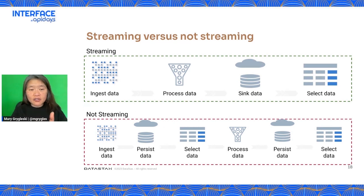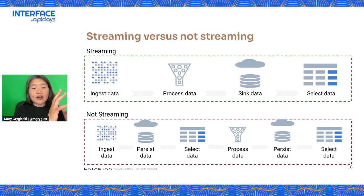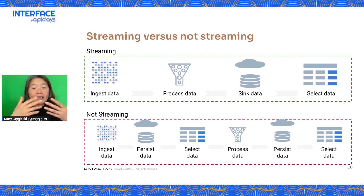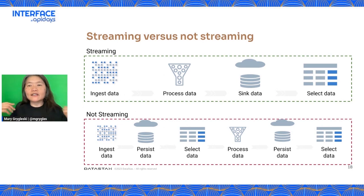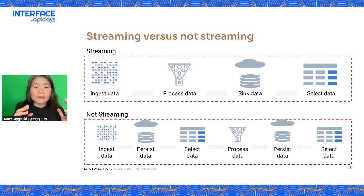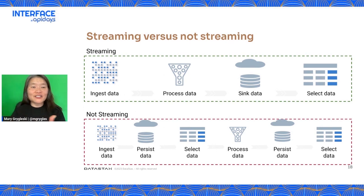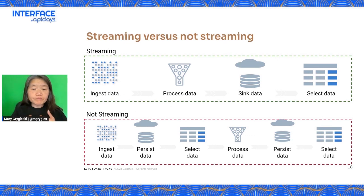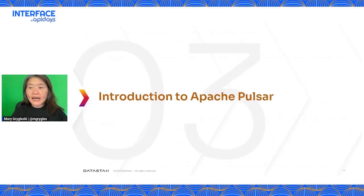Comparing modern day streaming with ETL (Extract, Transform, Load): both ingest data, process it, and write it to a destination. But ETL systems involve a database or file system to store intermediate data, which incurs disk I/O cost and time. Modern day streaming — for example using Apache Pulsar — sends data to Apache Flink, Apache Pinot, or uses a Pulsar Function to transform data in memory, writing to the sink in memory, making it very fast.